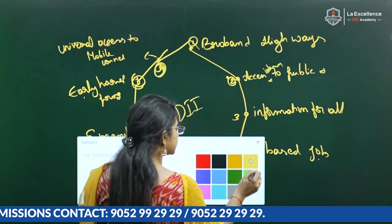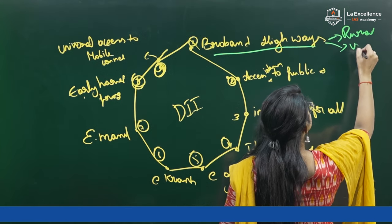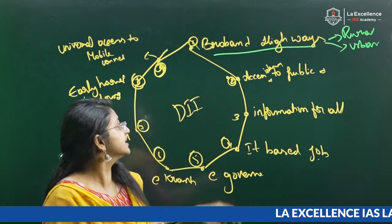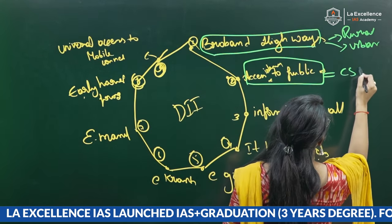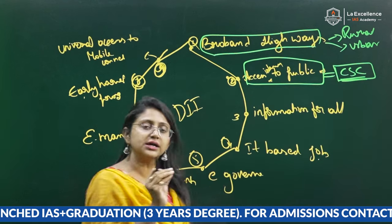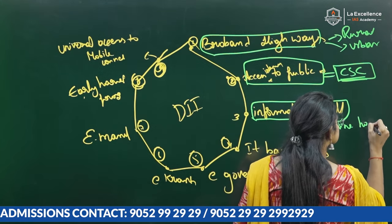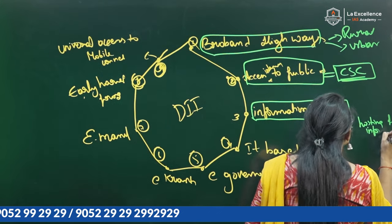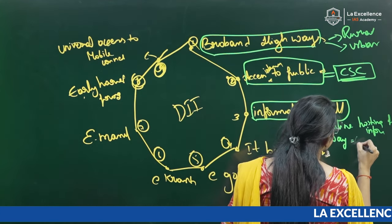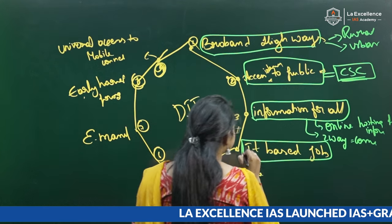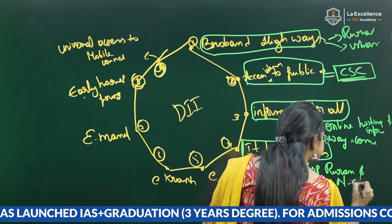The first pillar, broadband highways, involves constructing broadband highways in rural and urban areas, and a National Information Infrastructure is also created. The second pillar, access to internet for the public, is delivered through Common Service Centers, which deliver government services to the people. The third pillar, information for all, includes online hosting of government information using social media platforms, involving two-way communication between citizens and government. The fourth pillar is IT-based jobs, creating IT-based employment especially in rural areas and northeast areas.